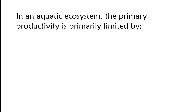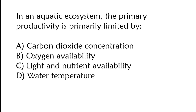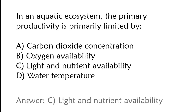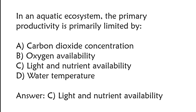In an aquatic ecosystem, the primary productivity is primarily limited by: A) carbon dioxide concentration, B) oxygen availability, C) light and nutrient availability, D) water temperature. The correct answer is option C, light and nutrient availability.